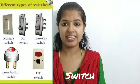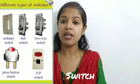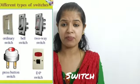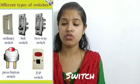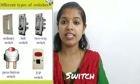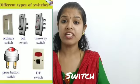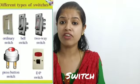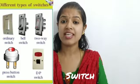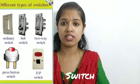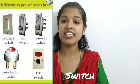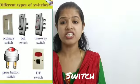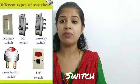Next is the double pole switch, or DP switch. As you can see from the picture, it is usually used with electric motors because electric motors carry a lot of current. So we use such switches to operate electric motors. These are the different types of switches: ordinary switch, bell switch, press button switch, two-way switch, and double pole switch.